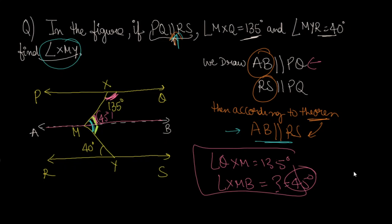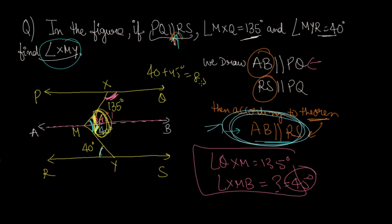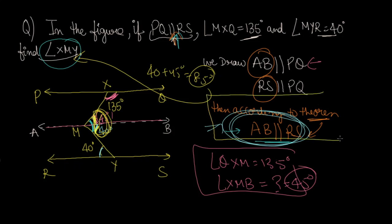Now look at lines AB and RS — we have proved they are parallel. So these two angles are alternate interior angles. Angle MYR is 40 degrees, so the alternate angle at M is also 40 degrees. The whole angle XMY is 40 plus 45, which equals 85 degrees. That is the answer.